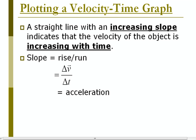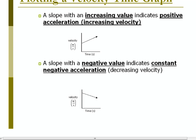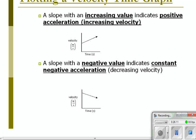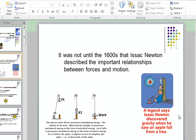Plotting a velocity-time graph: a straight line with an increasing slope indicates that the velocity of the object is increasing with time — that straight line part is really important. Slope is rise over run, so change of velocity over change of time, which is our acceleration. A slope with an increasing value indicates positive acceleration; a slope with a negative value indicates negative acceleration. Page 61 in your workbook.